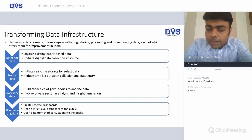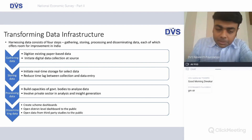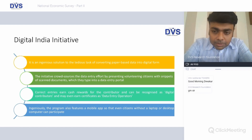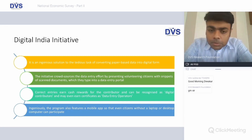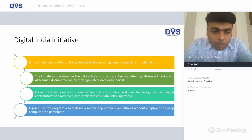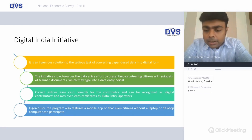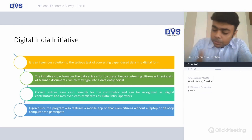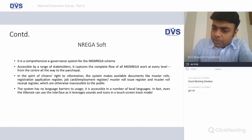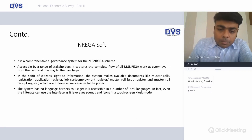The first steps to transform the data infrastructure involve gathering, storing, processing, and disseminating data. The Digital India initiative has an interesting and ingenious suggestion where the government is trying to crowdsource data entry volunteers who can earn cash rewards — it's more like a freelancing opportunity for professionals who can work as data entry operators, earn certificates, and make a living. The program also features a mobile app so you don't necessarily need a computer or laptop to work.